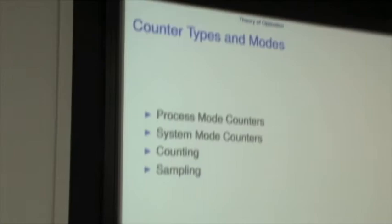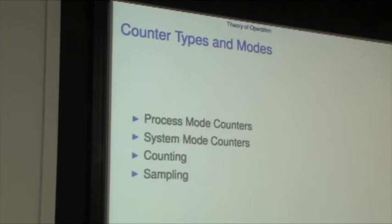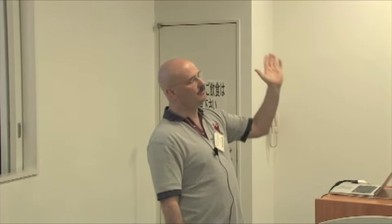In HWPMC there is a matrix of how things are counted. Events can be counted in process mode only — once your process enters the kernel, there are no more events credited to your process. So if your process is running and counting instructions and then blocks or executes a system call, if you're only counting process mode, you're not going to count any of the work done in the kernel. That can be done by any user on FreeBSD — that's not a privileged operation. Privileged operation is counting things in the kernel, called system mode counters.